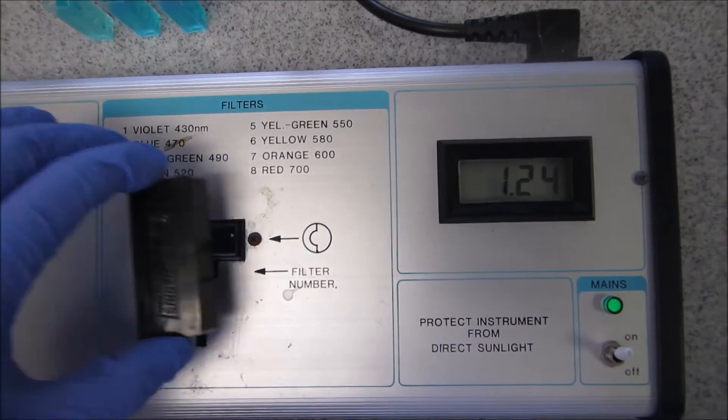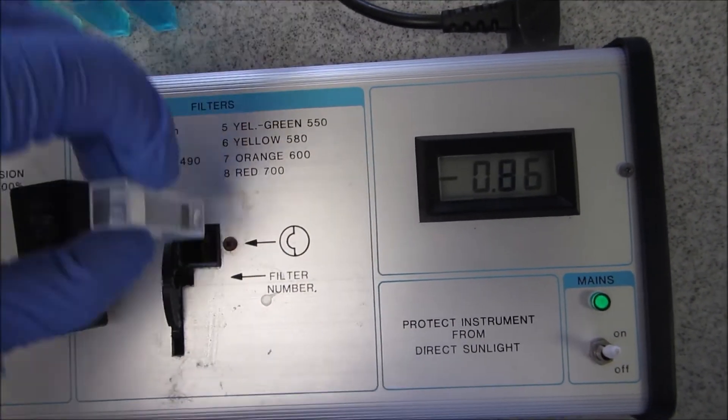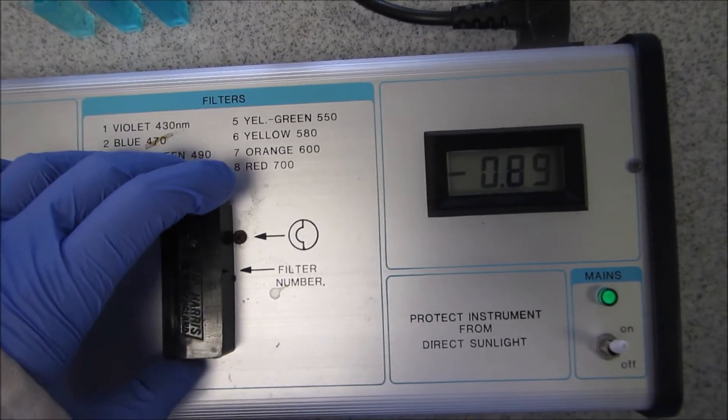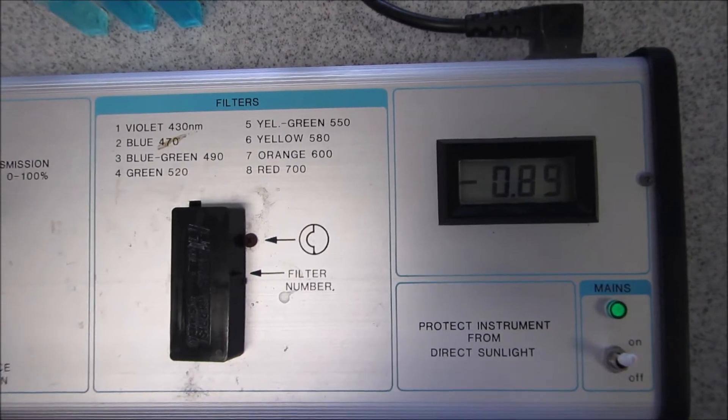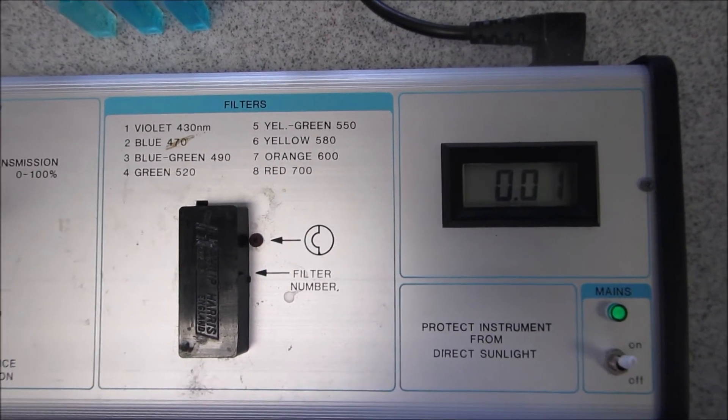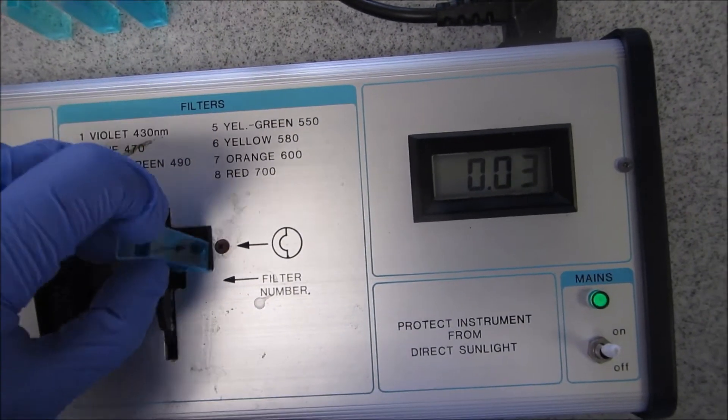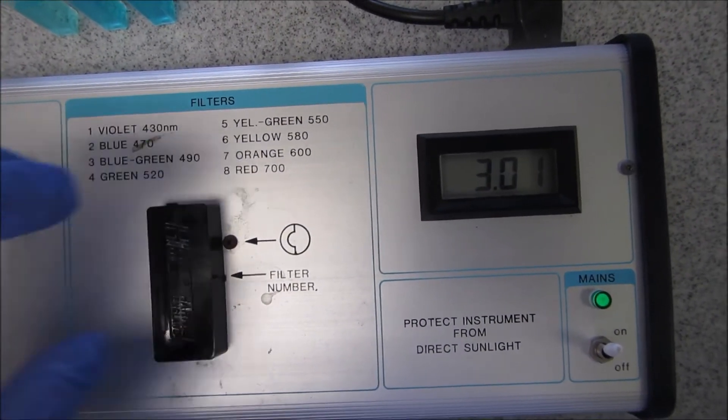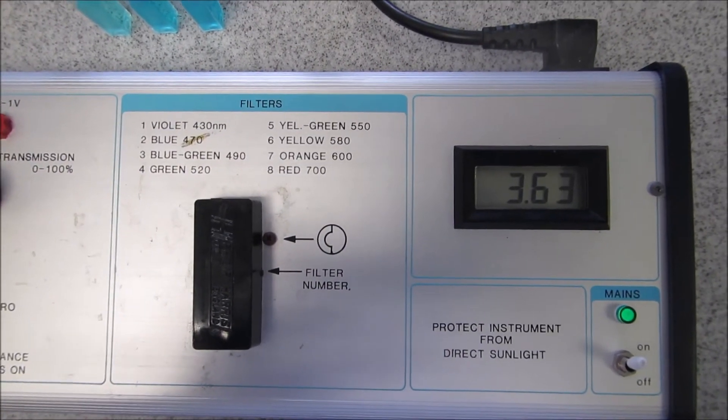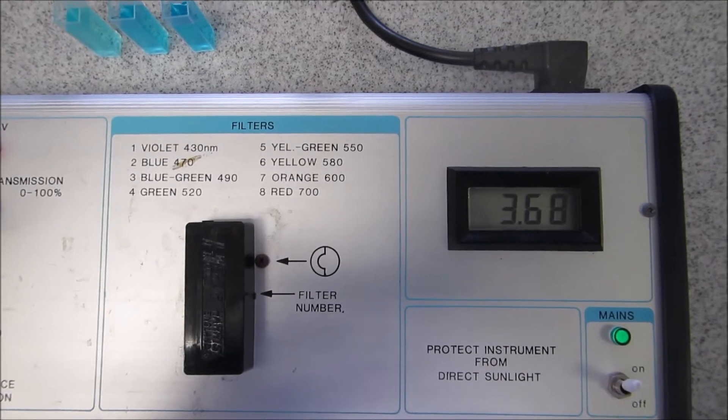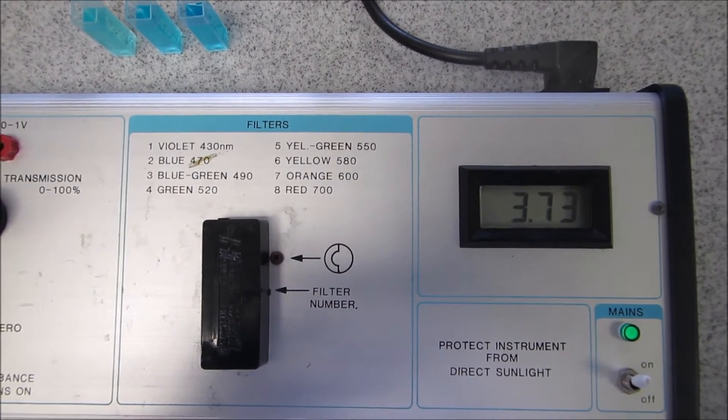I'll try the final one which is 700 nanometers. I'll put in my blank and zero it. So if this is less than 1.26 we're going to go back down to the orange. It's higher, so this is the maximum absorbance that we've got on the 1 molar. This is the wavelength that we're going to use for all further readings.